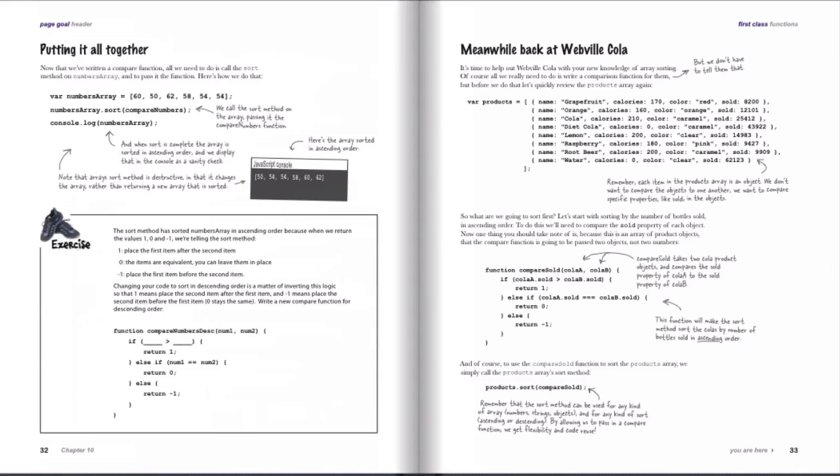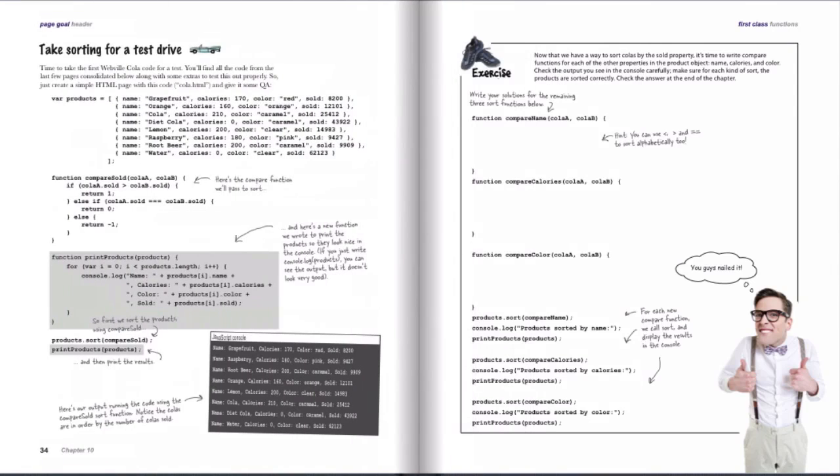Numbers, objects, whatever you like. Sort doesn't care what you're sorting, and it doesn't really care how you're sorting it because you specify that with the function. It just does its sort. So you'll find out more when you read the chapter, but it really is kind of a cool thing.